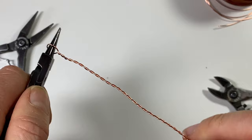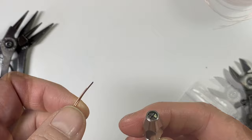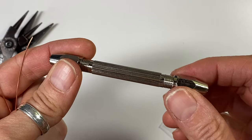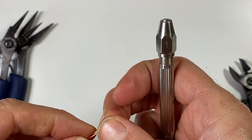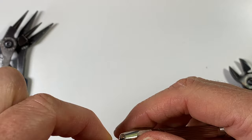And this is your twisted wire totally by hand. The next technique is using a pin vise, which I use for twisting my square wire, but you can also use it to twist two round wires together as well.